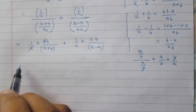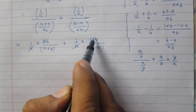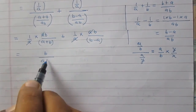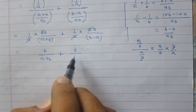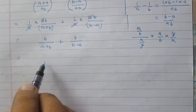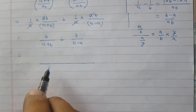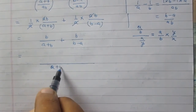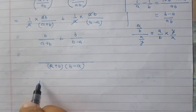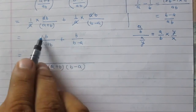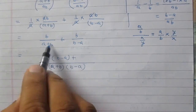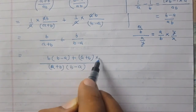We can cancel a in both parts, giving b upon a plus b, plus b upon b minus a. Further simplifying by combining these fractions, the denominator is a plus b multiplied by b minus a, and the numerator is b times b minus a, plus a plus b times b.